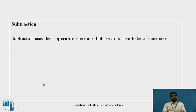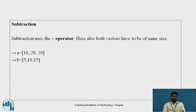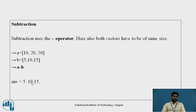In the same way, subtraction uses the minus operator — both vectors should be row vectors or both column vectors. So a minus b: 10-5=5, 20-10=10, 30-15=15.